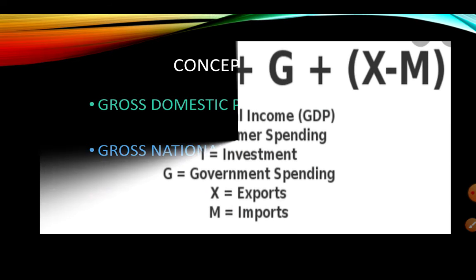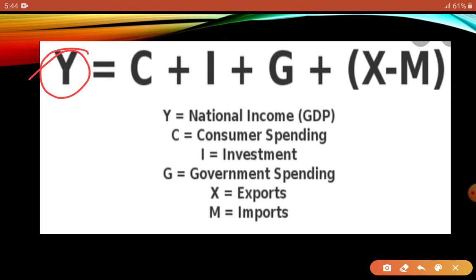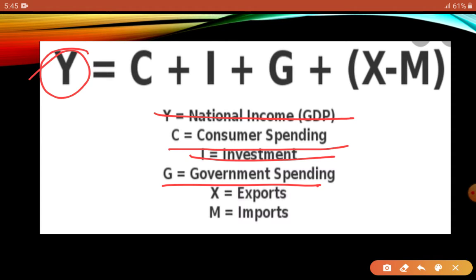Let's talk about GDP — Gross Domestic Product. 'Domestic' means home. GDP is the value of all goods and services produced within a country. The formula is: Y = C + I + G + (X − M), where Y is GDP, C is consumer spending, I is investment, G is government spending, X is exports, and M is imports. So whatever goods we sell to other countries minus whatever we buy from other countries is added to get GDP — the monetary value of all goods and services produced inside the country.